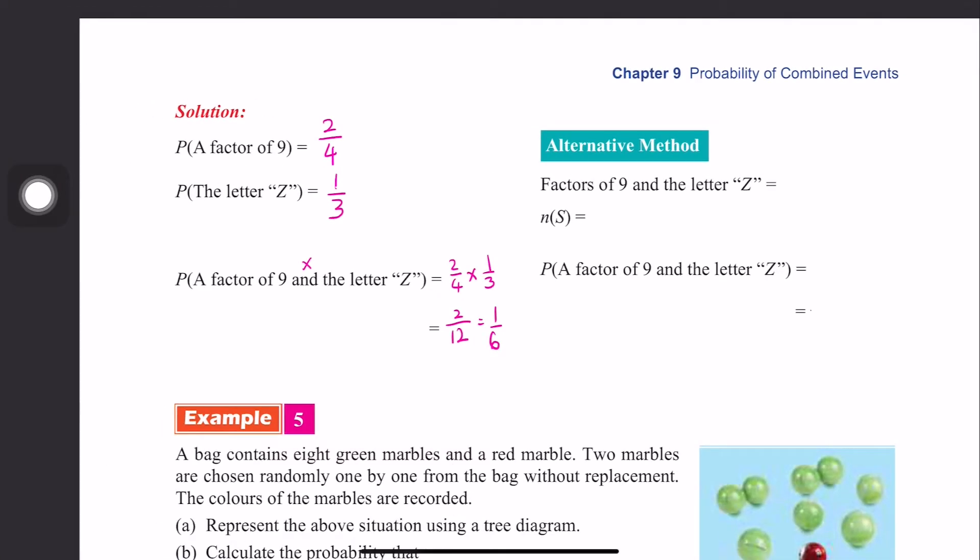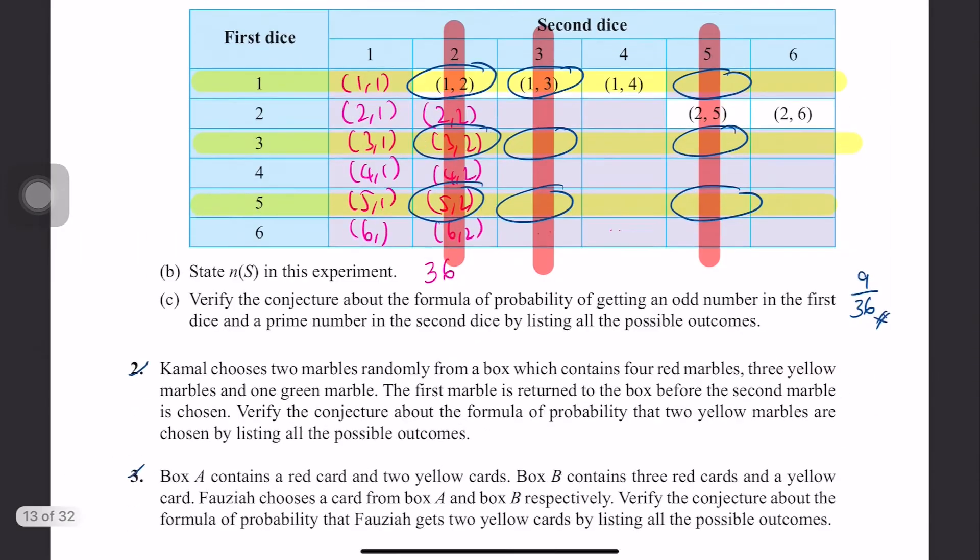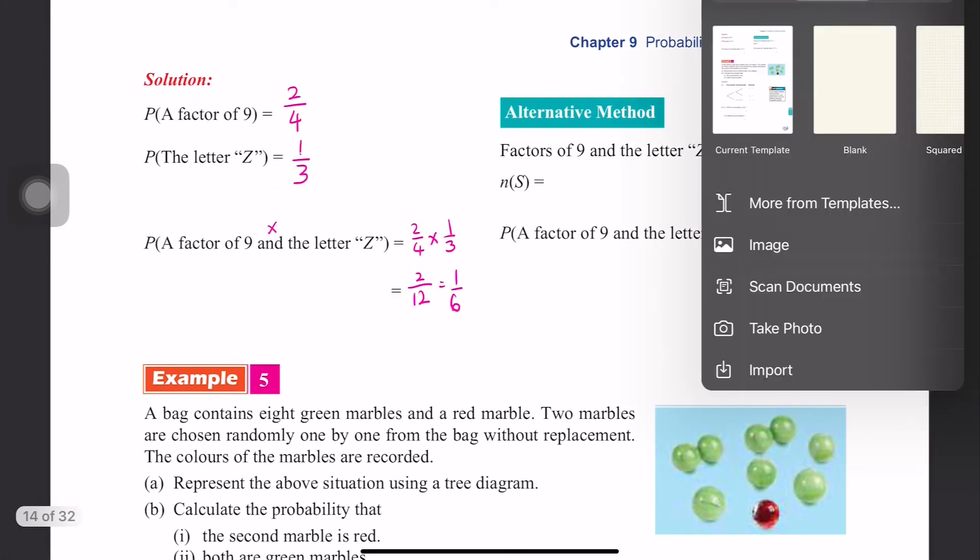For example, if we want to use listing, let me do it here. This is for listing. We have box A with 3, 5, 7, 9. Then box B is X, Y, Z. We do it like this.